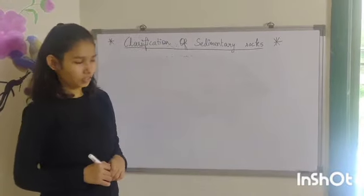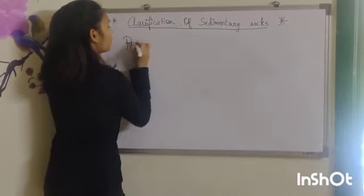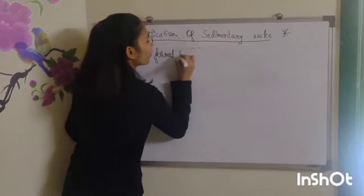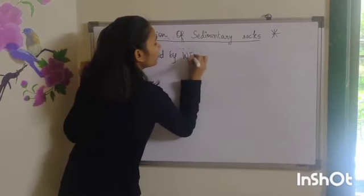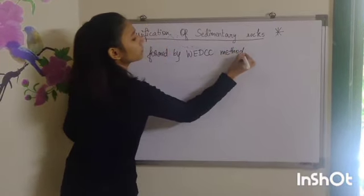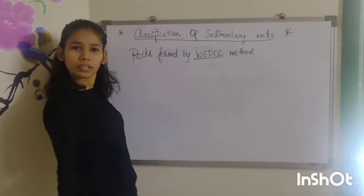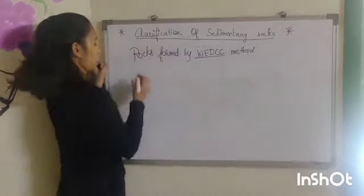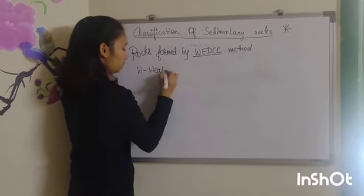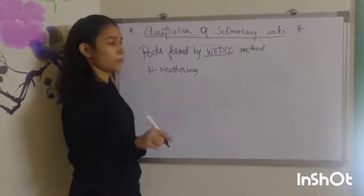But before moving on to classification, let us revise what sedimentary rocks are. The rocks formed by the WEDCC method are known as sedimentary rocks. W stands for weathering. Weathering is the breakdown of pre-existing rock in the form of sediments.